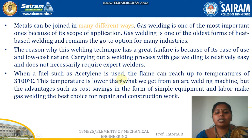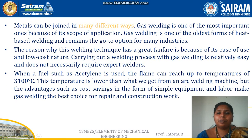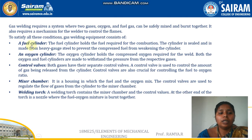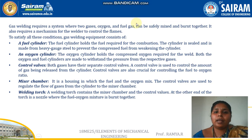Carrying out a welding process with gas welding is relatively easy compared to other arc welding methods. When a fuel such as acetylene is used, the flame can reach a temperature of 3100 degrees Celsius. This temperature is lower than what we get from arc welding, but it gives better performance. Gas welding requires two gases: oxygen and a fuel gas.